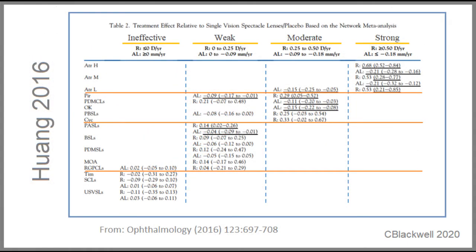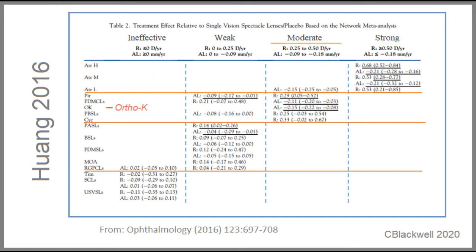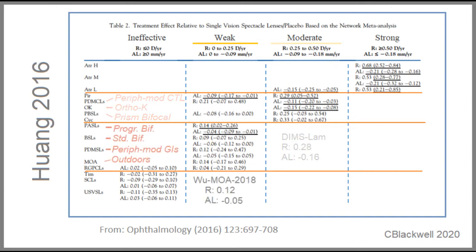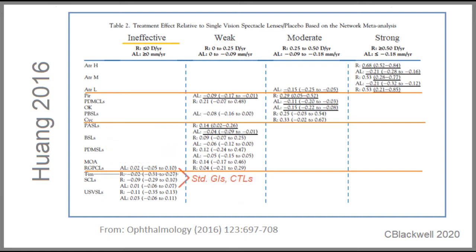For a final review, the authors combined refraction and axial length results in one table. The strong effect group are all concentrations of atropine. The red arrowheads are other medications — pirenzapine is similar to atropine but is not widely available, and timolol showing no effect. The moderate effect group is headlined by ortho-K, and also includes peripheral modified contact lenses and the prism bifocal. The weak effect group included bifocal glasses and outdoor time. Ineffective were standard glasses and contact lenses — recall these were the control groups.